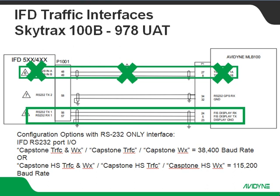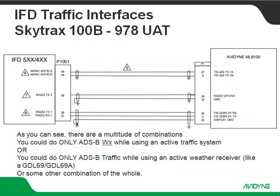As you can see, there are a lot of different ways to go about skinning a cat when it comes to this installation. The big thing to keep in mind: if an aircraft has an active traffic system on board and wants to keep that rather than use ADSB traffic, but still wants ADSB weather, we've got the option to do just that. Likewise, if they have an active weather system like a GDL 69 and want to keep it but take advantage of ADSB traffic, we can set it up that way as well — or any combination in between.